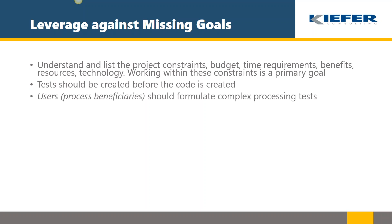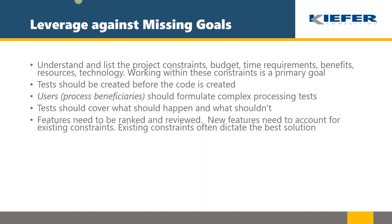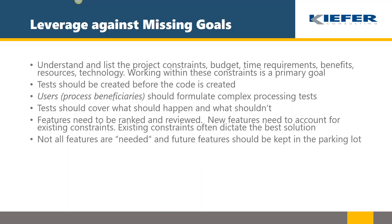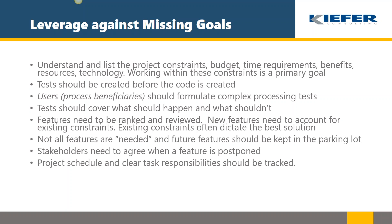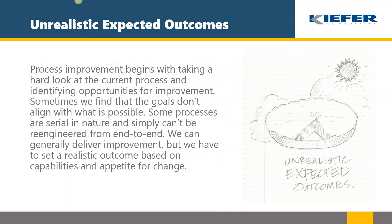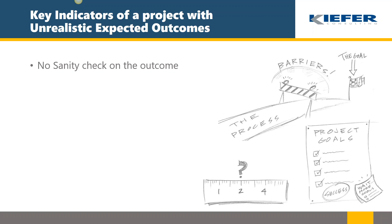Before you code, you should have the bulk of your tests already written. It's very easy to pass a test when you know the questions upfront — a developer can code directly to the test. Users should formulate complex processing test scenarios since they know what edge cases look like. Tests should cover both what should happen and what shouldn't — for example, an administrator should be able to change a value but a regular user should not. Features need to be ranked, reviewed, and any new features must account for existing constraints. Put non-essential features in a parking lot, with stakeholders agreeing when a feature is postponed.